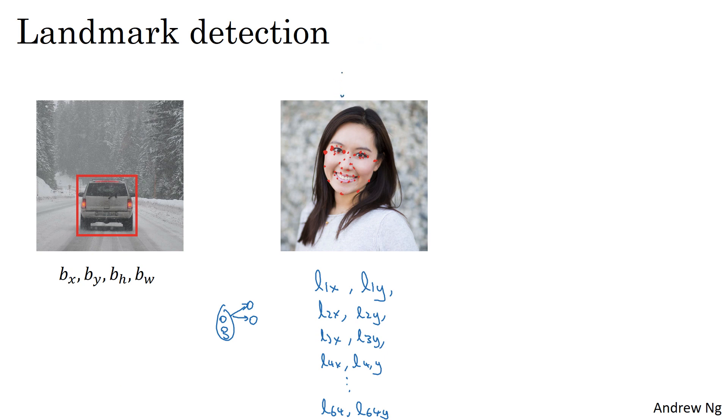So what you do is you'd have this image, a person's face as input, have it go through a ConvNet and have the ConvNet have some set of features, maybe have it output 0 or 1, like is there a face in this or not, and then have it also output L1X, L1Y and so on down to L64X, L64Y. Here I'm using L to stand for a landmark. So this example would have 129 output units: one for is there a face or not, and then if you have 64 landmarks, that's 64 times two, so 128 plus one output units. This can tell you if there's a face as well as where all the key landmarks on the face are.